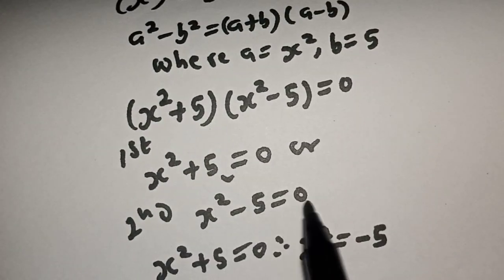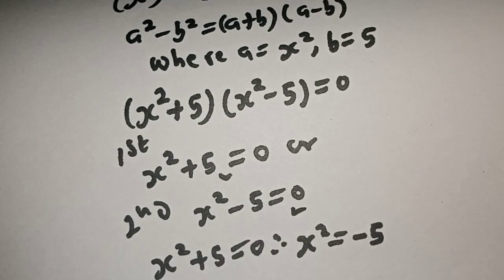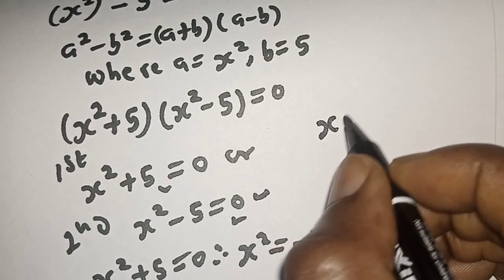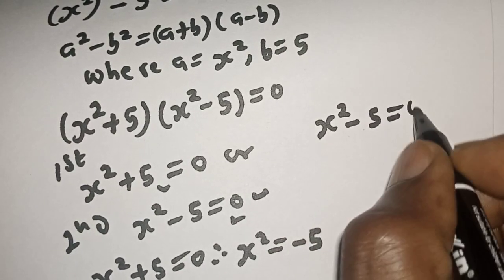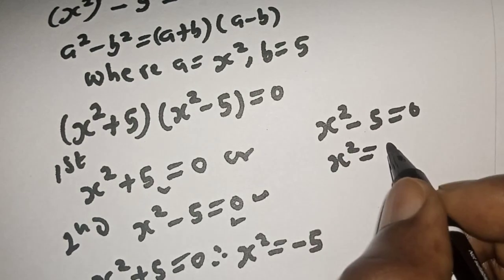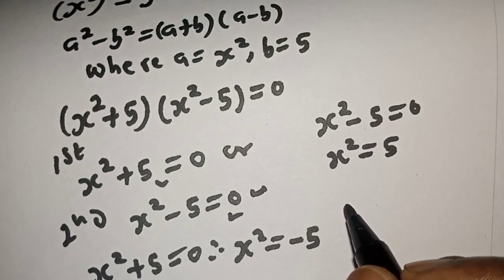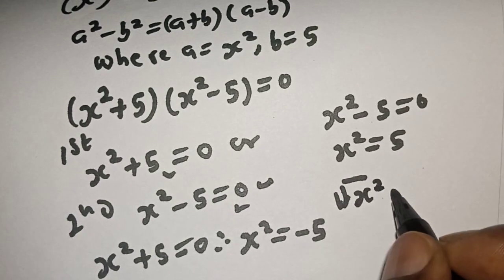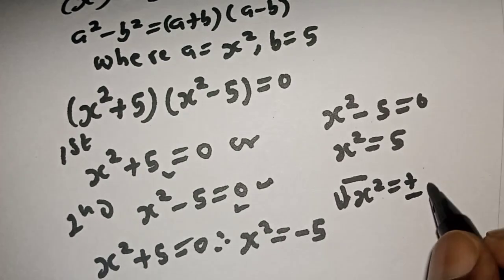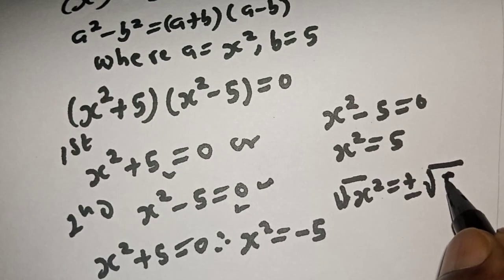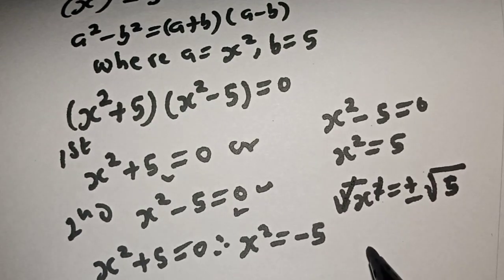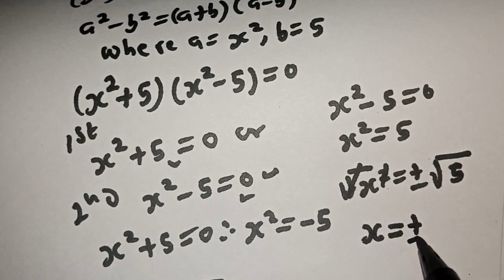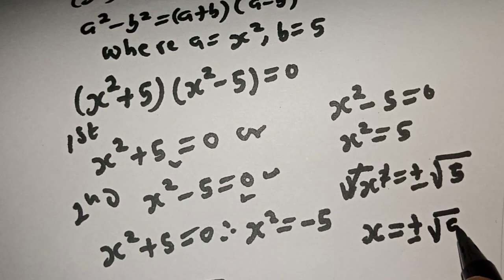Now let's solve for s from the second case. s square minus 5 is equal to 0, so s square is equal to 5. Let's take the square root of both sides. The square root of s square gives us s, and this cancels, so s is equal to plus or minus square root of 5.